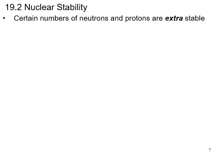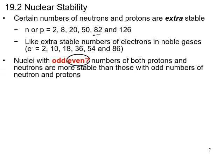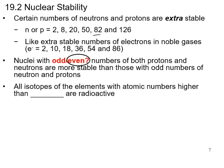Let's talk about nuclear stability. Nuclei decay due to instability. Certain numbers of neutrons and protons are extra stable — these are called magic numbers, similar to the noble gas electron configurations: 2, 8, 20, 50, 82. Nuclei are built in shells similar to electrons. Nuclei with even numbers of both protons and neutrons are more stable than those with odd numbers.